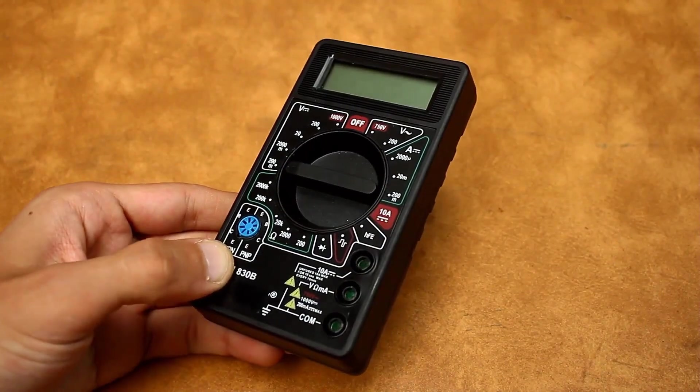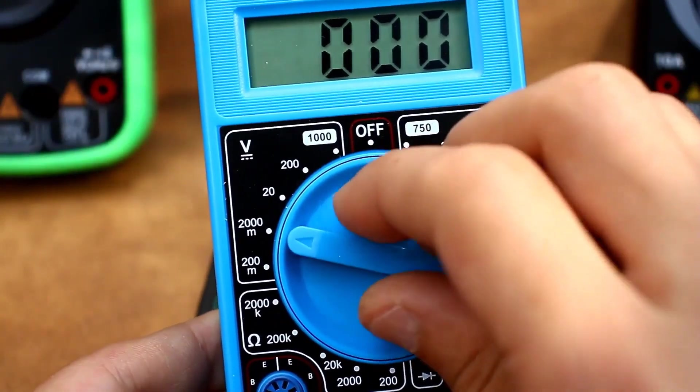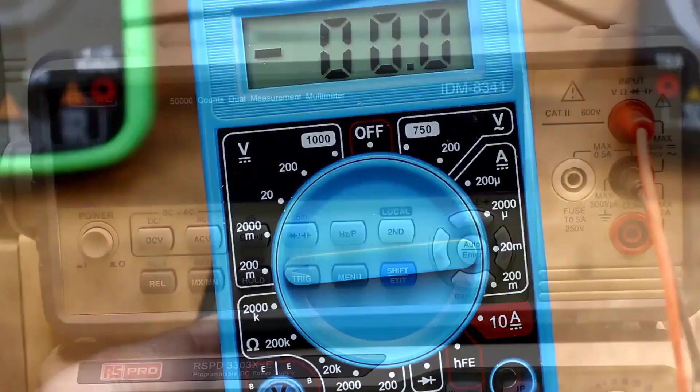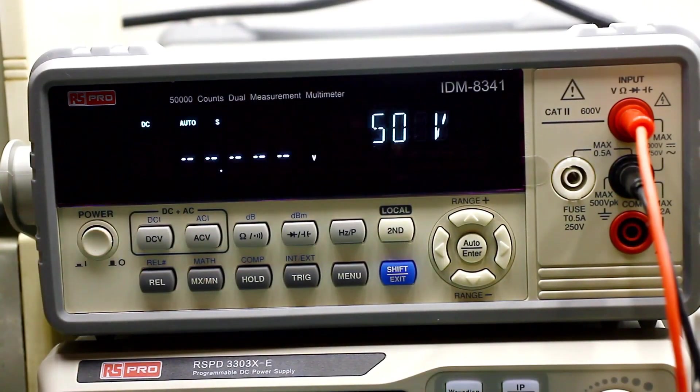For household needs, a regular multimeter with manual range selection is sufficient. High accuracy is not required from them. But there are areas where accuracy is paramount, which is why such multimeters are produced.